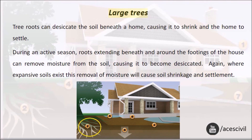Large trees. Tree roots can desiccate the soil beneath a home, causing it to shrink and the home to settle. During an active season, roots extending beneath and around the footings of the house can remove moisture from the soil, causing it to become desiccated. Where expansive soils exist, this removal of moisture will cause soil shrinkage and settlement.